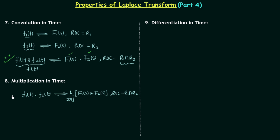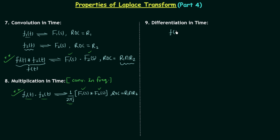When we multiply two time domain signals, the resultant Laplace transform is the convolution of the two Laplace transforms divided by 2πj. Therefore this property is also known as convolution in frequency, because we are performing convolution of frequency domain signals. Now we move to property number 9, differentiation in time, where a time domain signal f(t) has Laplace transform F(s) with region of convergence r.